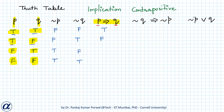The next part is very interesting: when p is false and q is either true or false, in both cases the implication will be true. Why? Because if we start with falsehood, we can prove any conclusion — so if we start with falsehood, any conclusion is possible to achieve, and therefore our implication will be true.